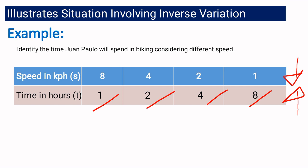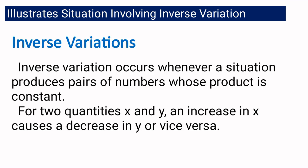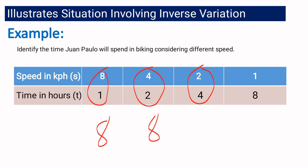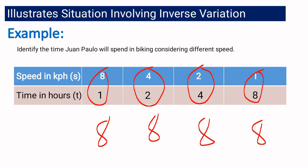But the trend of the values is not enough for us to say that this is actually an inverse variation. By definition, it is an inverse variation if the pairs of numbers give us a constant product. If we get the product of the pairs: 8 times 1 is 8, 4 times 2 is 8, 2 times 4 is 8, and 1 times 8 is 8. The products are constant, which means this situation is an inverse variation.